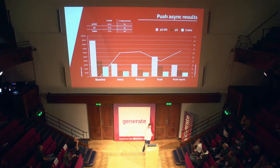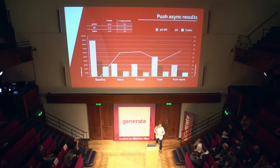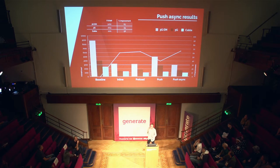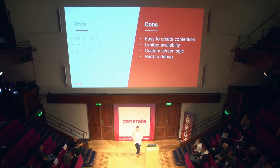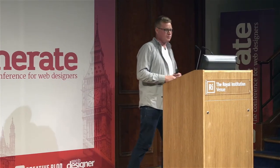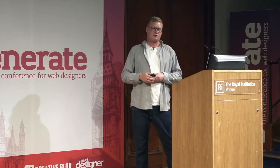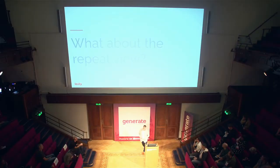With async push, we now have a 68% improvement on time to first meaningful paint — the best user experience we could achieve, delivering our assets as optimally as possible. It has pros and cons: we're using the idle time and it ensures delivery before any preload semantics would. But it requires custom server logic, it's very hard to debug, and it can create contention on the network unless you test. I can't stress enough how you have to be testing with HTTP/2.